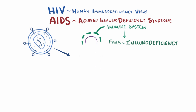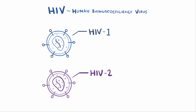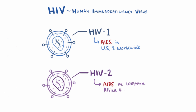Now there are two distinct types of HIV: HIV-1 and HIV-2. HIV-1 is more commonly associated with AIDS in the US and worldwide. HIV-2 is more rare and typically restricted to areas in western Africa and southern Asia. HIV-2 is so uncommon that HIV almost always refers to HIV-1.